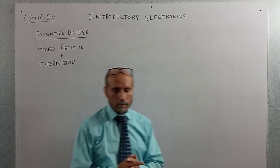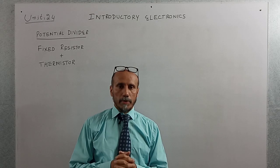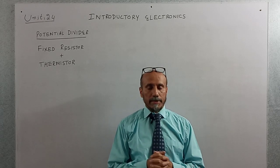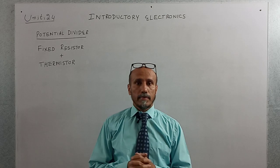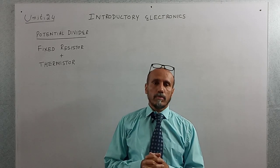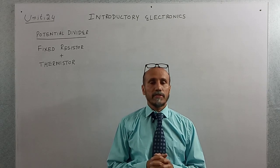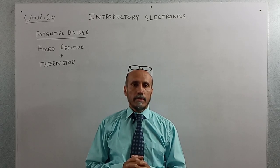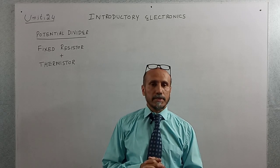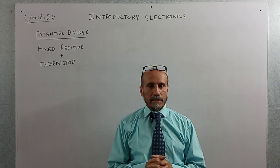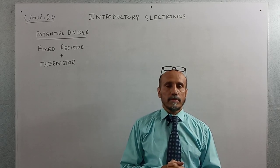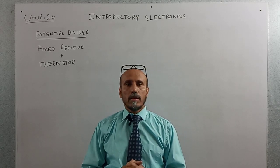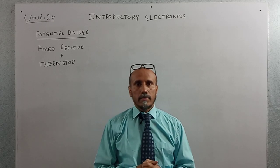In unit number 24, introductory electronics, we were discussing potential dividers. We have already discussed potential dividers in two ways: first by connecting two fixed resistors, and second by connecting one variable resistor and one fixed resistor. Now there is another combination of potential divider — using one fixed resistor and a thermistor.